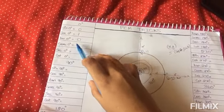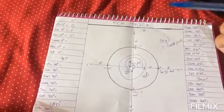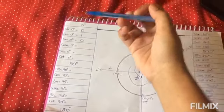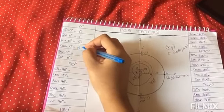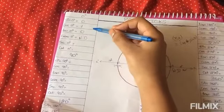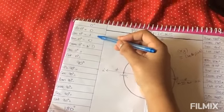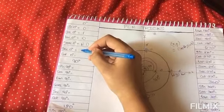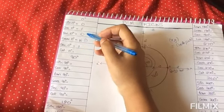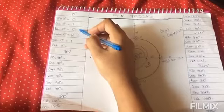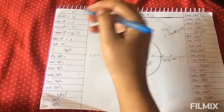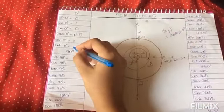Cosecant 0 degree is nothing but the reciprocal of sin. Reciprocal of 0 is 1 by 0, which is not defined. Secant 0 is the reciprocal of cos 0 which is 1. Reciprocal of 1 is 1 itself. And cot 0 degree is reciprocal of tan 0 degree, which is 0, so it is not defined.